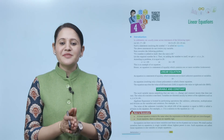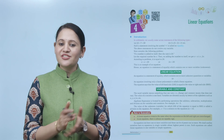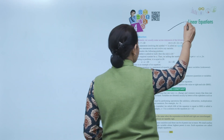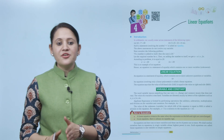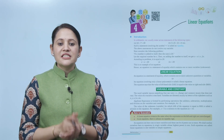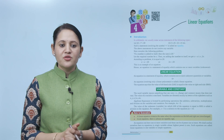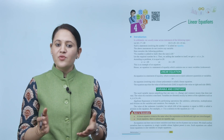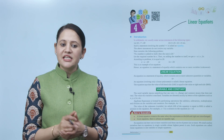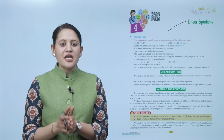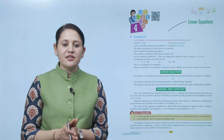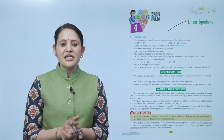Hello kids, welcome to today's maths class. Today we'll do linear equations. In arithmetic we usually come across statements of the following type: 22 plus 7 equals 29, 3 into 5 plus 2 equals 21, etc. Such a statement involving the symbol 'equal' is called an equality. The above statements do not involve any variable.